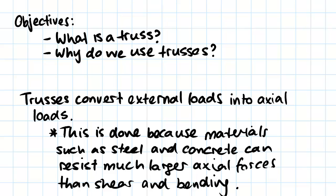A truss is used to convert external loads into axial loads. This is done because materials such as steel and concrete — the materials we'll mostly be using to construct things — can resist much larger axial forces than shear and bending forces. If we remember the previous topic where we discussed axial, shear, and bending...